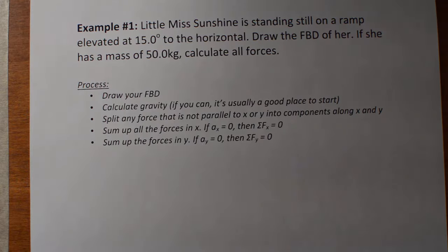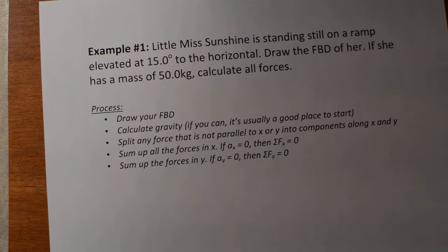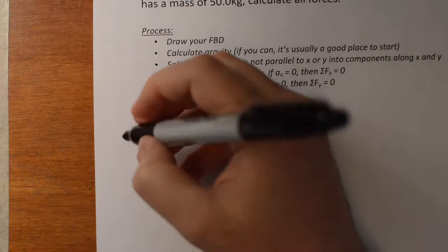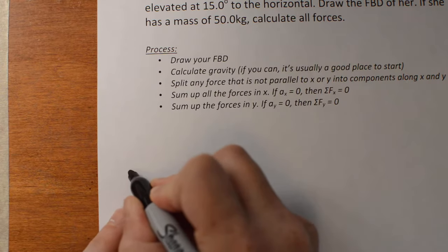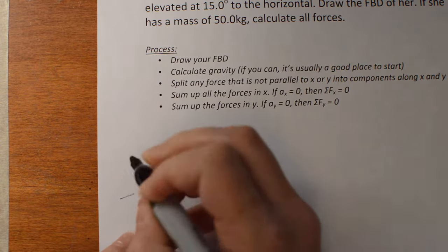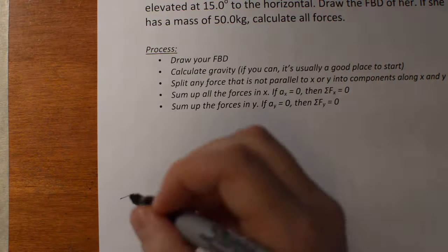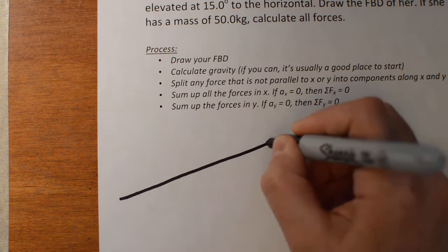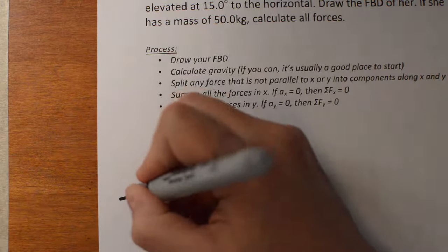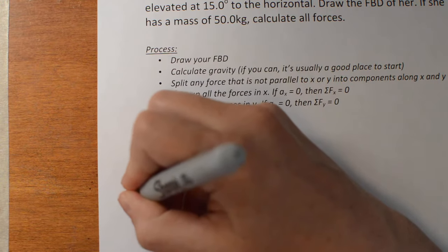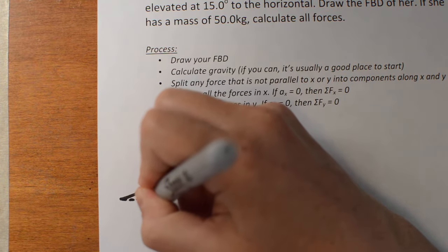Here's our situation: we have Little Miss Sunshine standing on a ramp. When you draw your ramp, try and make a nice shallow ramp, something kind of like this. Try not to make it too steep — if you make it like 45 degrees it's just harder to see where all your angles are.